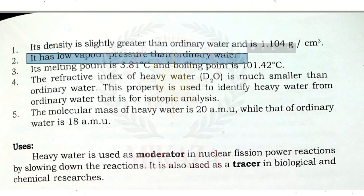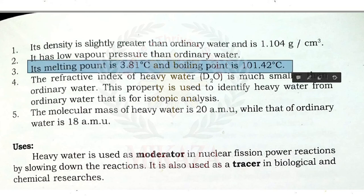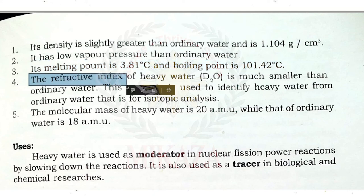The refractive index of heavy water is much smaller than that of ordinary water. The refractive index refers to the angle by which light bends when it passes through a medium — light travels in a straight line but changes angle when it enters a different material, and how much the angle changes is the refractive index. In heavy water, light bends differently than in normal water.